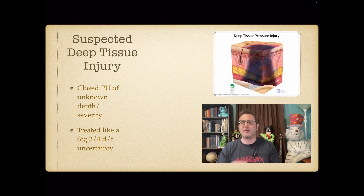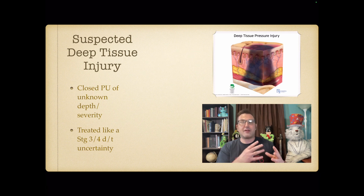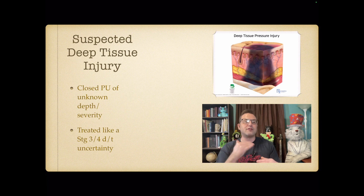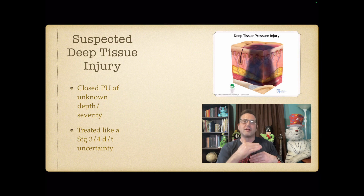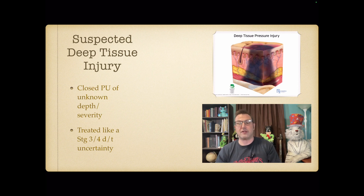A suspected deep tissue injury is a closed pressure ulcer of unknown depth or severity. We know there's a pressure injury but can't tell how far the damage has gone because it's still closed. It's treated like a stage 3 to 4 due to the uncertainty. Remember, beyond stage 2 it's not about the depth of a hole — it's about how far the damage has gone, which may exist without an open hole.